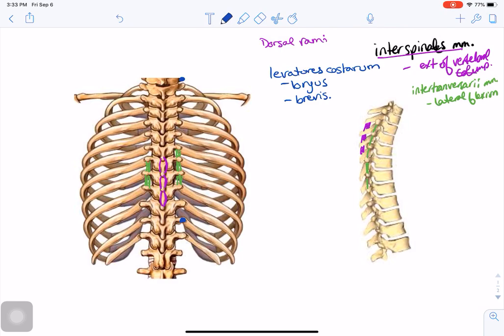They insert just lateral to the tubercles of the ribs. A brevis muscle would come like this, and a longus muscle like this.